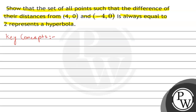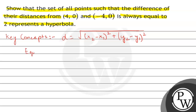The property to find out the distance between two points will be used, that is d equals the square root of (x2 minus x1) whole square plus (y2 minus y1) whole square. This is the formula to find the distance between two points. Also, the standard equation of hyperbola is important: x² by a² minus y² by b² equals 1. These will be used in the question. Let's start.